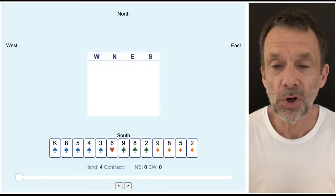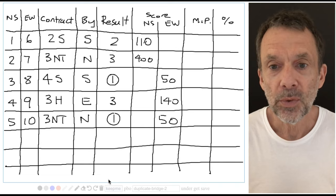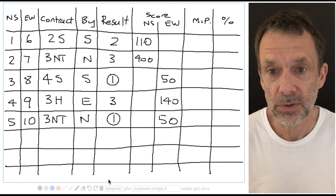First though, let's just have a look at how duplicate scoring works. So let's imagine this is the score sheet for a hand, we'll call it hand one, and we can see this hand has been played five different times at five different tables. So we have five different results.